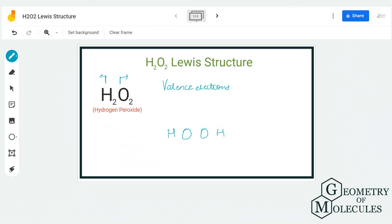Hi guys, welcome back to our channel. Today in this video we are going to look at the Lewis structure for H2O2, which is also known as hydrogen peroxide or dihydrogen dioxide because it has two hydrogen atoms and two oxygen atoms.